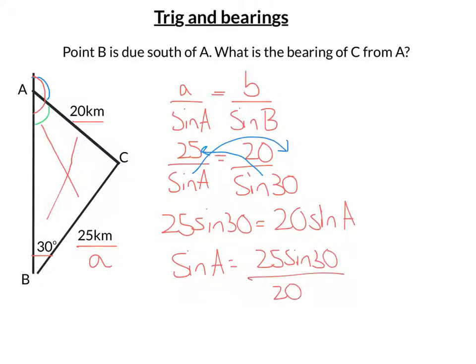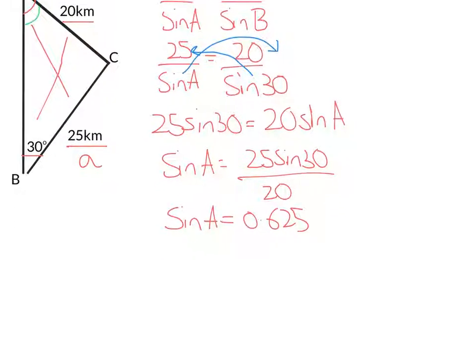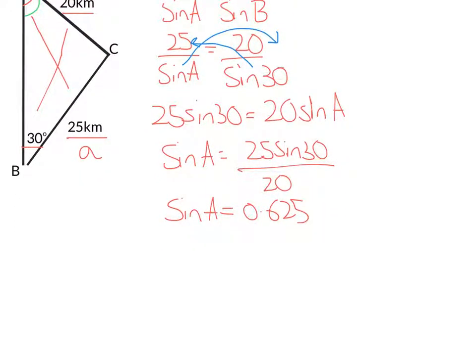And if I put that into my calculator, I get that sine A is 0.625. Now we need to find out what A is. So I'm going to take the inverse of sine to both sides and put into my calculator inverse sine of 0.625. And that comes out as 38.68 degrees.